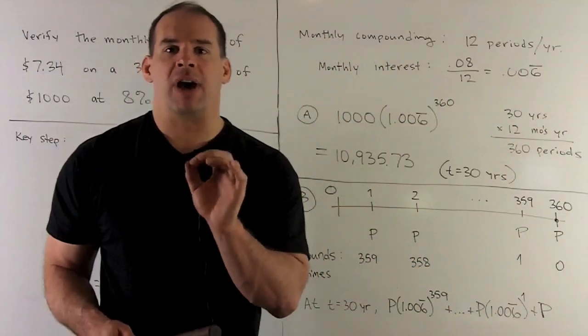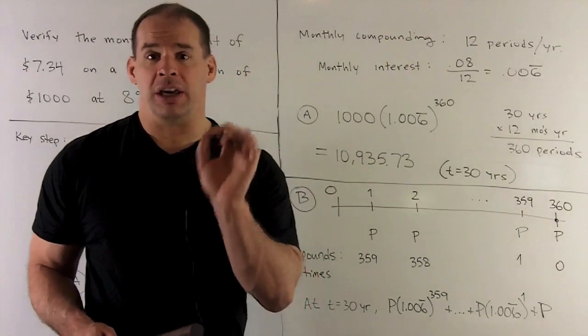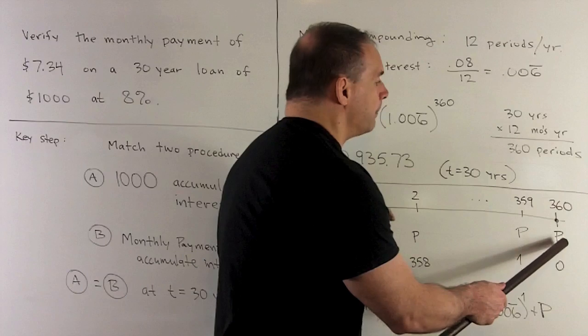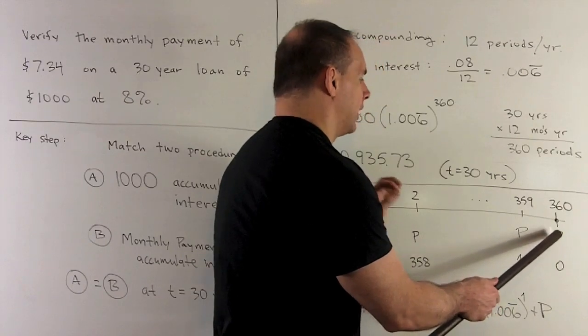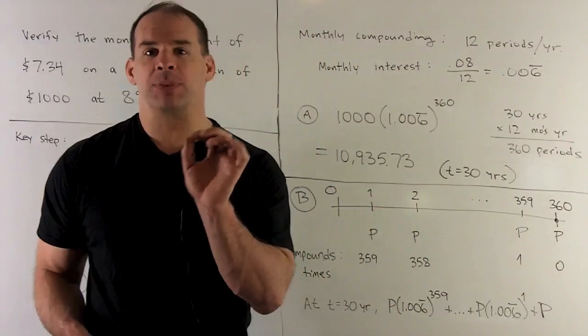Now, we have to figure out how much each of those payments is going to be worth at 30 years. Now, for the last payment, that's just going to be worth P. Here, we're not going to apply any interest since that's the very last payment that you make.